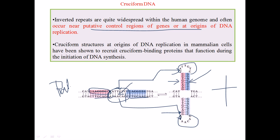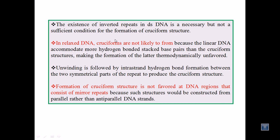Some interesting facts about cruciform DNA: the existence of inverted repeats in double-stranded DNA is necessary but not a sufficient condition to form a cruciform. Other conditions must be met — the presence of palindromic sequences is very important, and those palindromic sequences must be separated by stretches of nucleotides. In relaxed DNA, cruciforms are not likely to form because linear DNA accommodates more hydrogen-bonded stacked base pairs than cruciform structures.